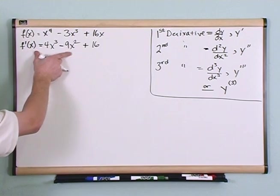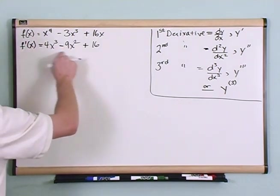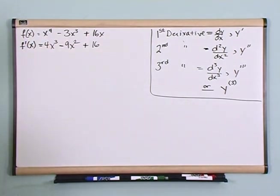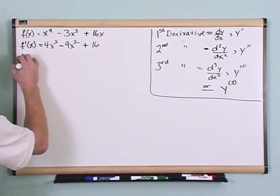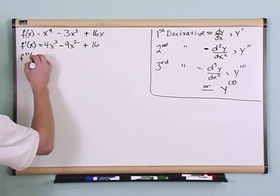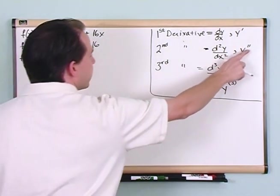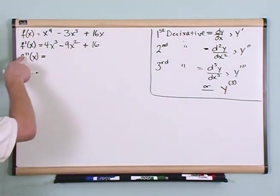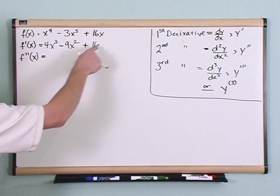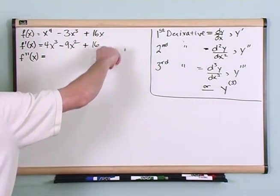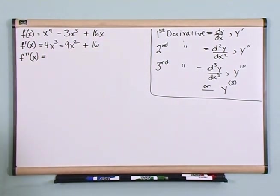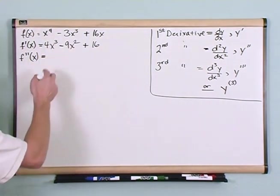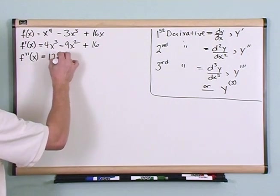This first derivative represents the slope of this curve at any given point. So the question is: what's the second derivative? We write that with the two little prime marks. In order to find the second derivative, you just look at the first derivative and take the derivative of that. So looking at this formula, let's take the derivative of it.